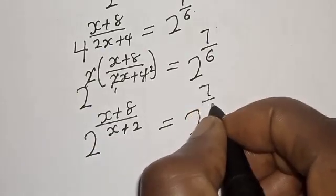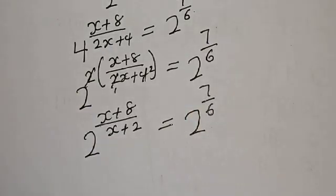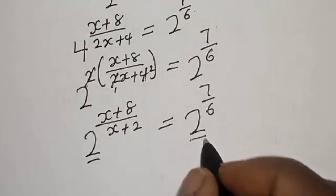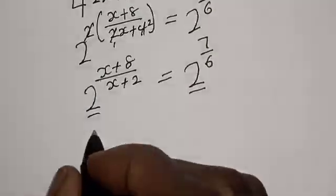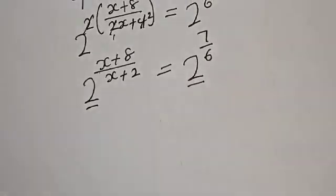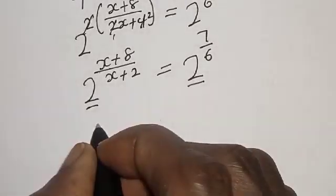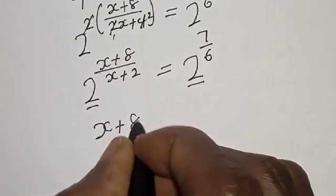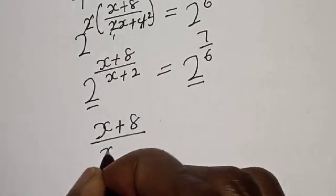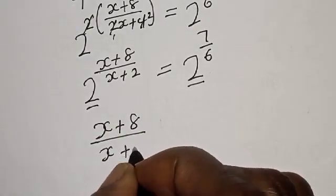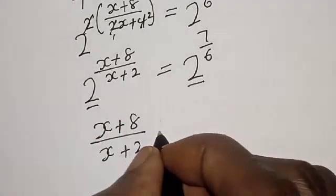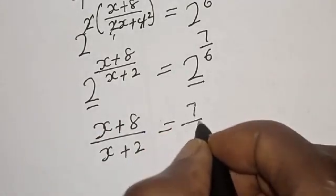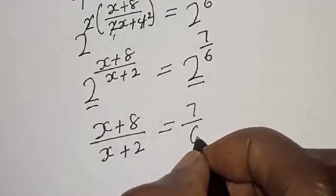Now they have the same base. Since the bases are equal, we are left with the exponents: (x+8)/(x+2) is equal to 7 over 6.